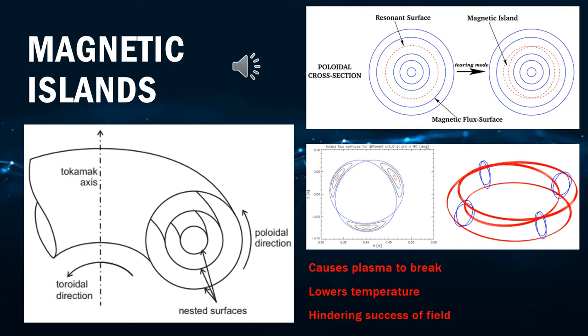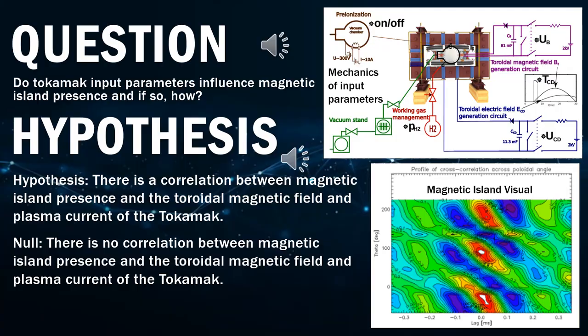However, instabilities can occur in the plasma. The one we're studying in particular is called a magnetic island, which is a reconnection or catching of the magnetic field lines. This means that the plasma can spread itself out, cooling down, and causing a loss of confinement. The question is, what are they caused by?